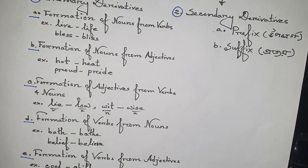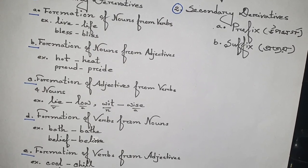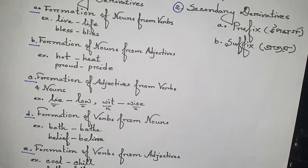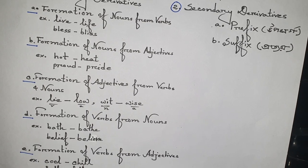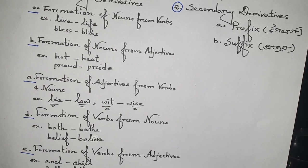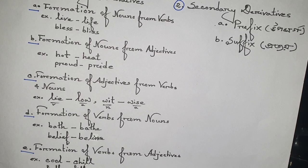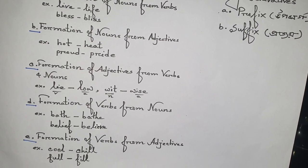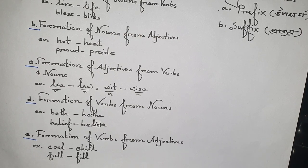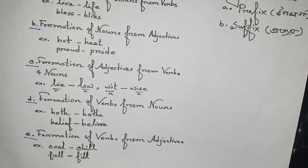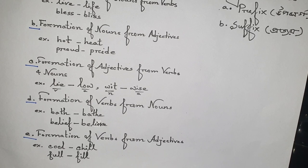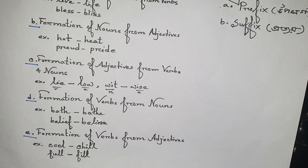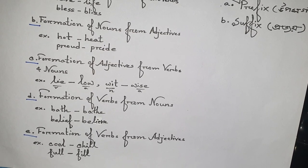Formation of verbs from nouns. Example: cool is an adjective; from there we are getting chill, which is a verb. Like this: full, feel.